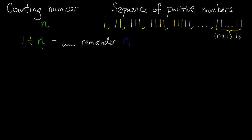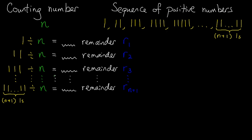When 1 is divided by n, we record the remainder as R1. When 11 is divided by n, we record the remainder as R2. When 111 is divided by n, we record the remainder as R3. And we keep repeating this process until we get to the last number in the sequence. When the last number is divided by n, we record the remainder as R(n+1).